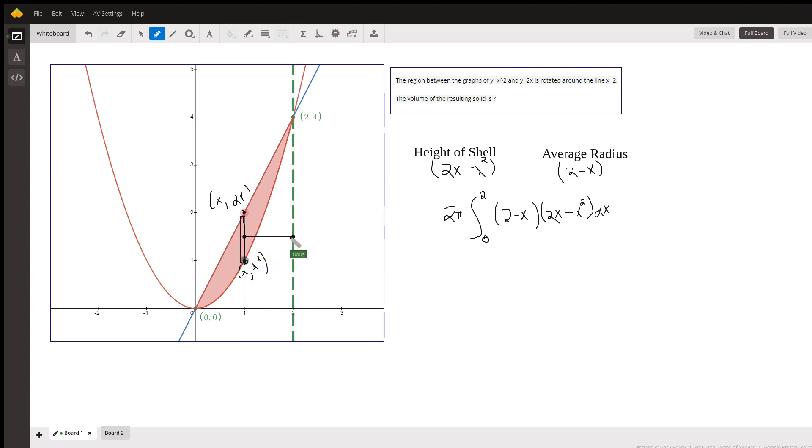The average radius is the distance from the axis of revolution to the center of your typical shell. Well, this distance is x and this distance is always 2. So 2 take away x leaves this average radius. Okay, so there's your average radius right there. For every x between 0 and 2, that's your average radius. So there's your definite integral.